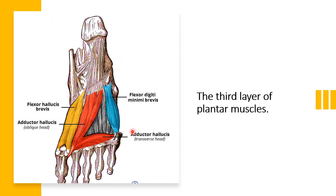The third layer has three muscles: flexor hallucis brevis, adductor hallucis (which has two heads), and flexor digiti minimi brevis. The adductor hallucis relates to the big toe, flexor hallucis brevis also relates to the big toe, and flexor digiti minimi brevis relates to the little toe.